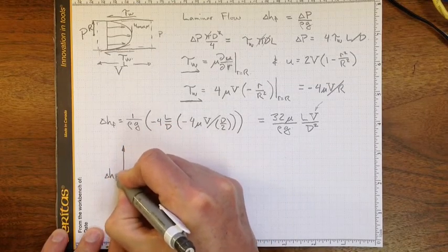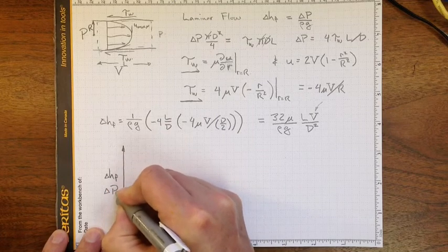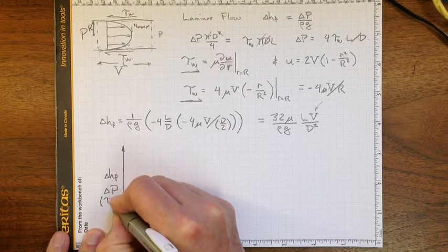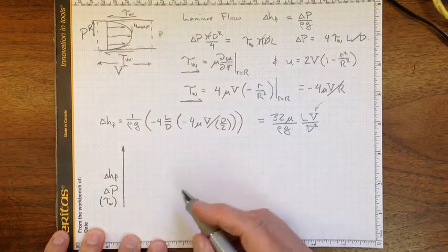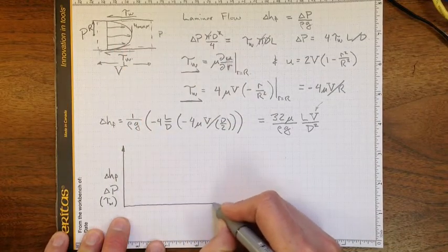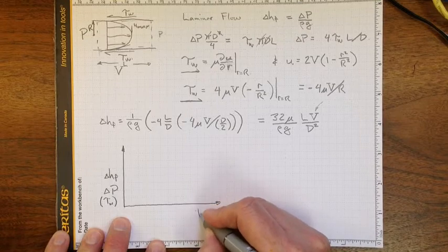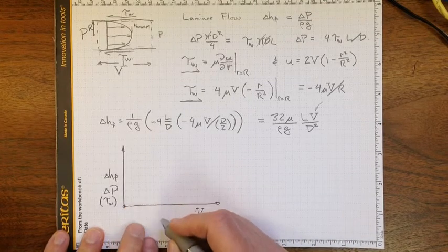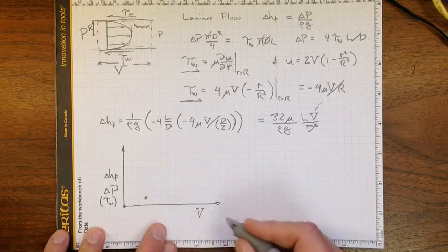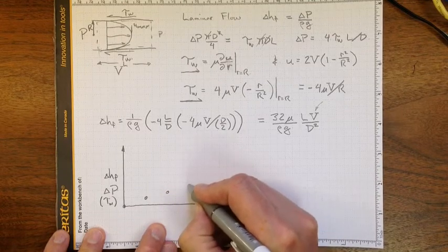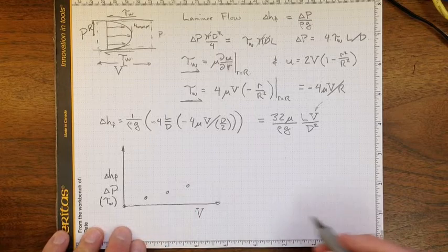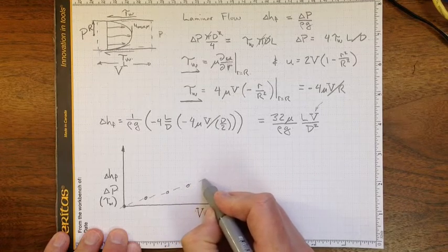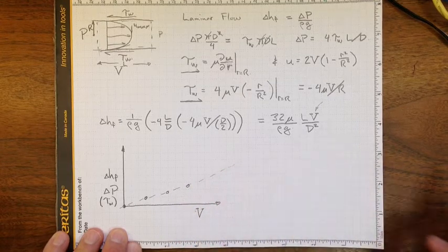So let's have a look at what we do see. If we measure that head loss due to friction, or that delta p, both of which are related to that wall shear stress, the average velocity in the pipe. They all depend on each other, as a function of velocity, the average velocity in the pipe. Well, no flow, no head loss. A little bit of flow, a little bit of head loss. Some more flow, some more head loss, and so on. This works really well, and we get more or less a straight line corresponding to our data.